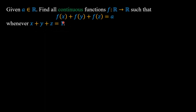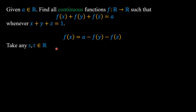The idea to solve this problem is to use several substitutions so that we can convert these equations into Cauchy equations. First we move f(y) and f(z) to the right hand side, so we have f(x) = a - f(y) - f(z). Then we take any two real numbers s and t, and first we substitute x = -s, y = s, and z = 1 into this functional equation.